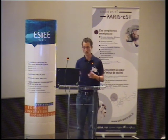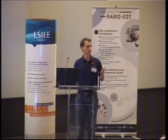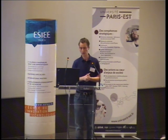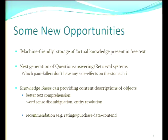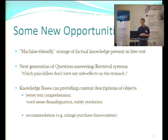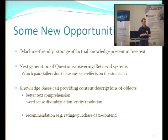For instance, we may use the information about entities for better text comprehension — for word sense disambiguation, because we will have features about different entities even if they are represented by the same name, or for entity resolution. But also for recommendation, we can use the content and descriptions of music, products, and everything present in these knowledge bases, and use that in conjunction with ratings or purchase data.